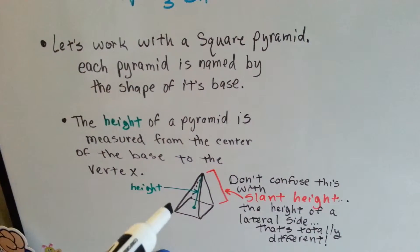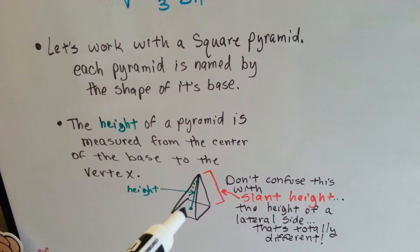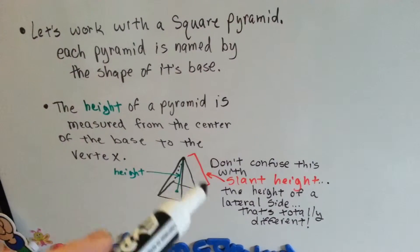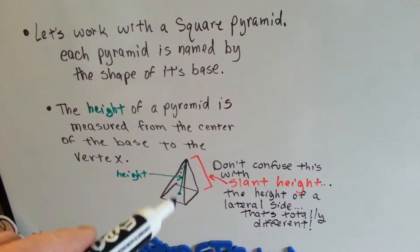The height of the pyramid is measured from the center of the base, right here, this green line, to the vertex. Don't confuse it with slant height, that's this. That's the height of the lateral side, that's completely different. It's a little bit more than the height.